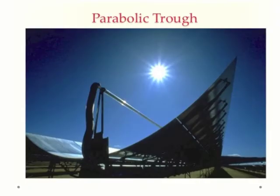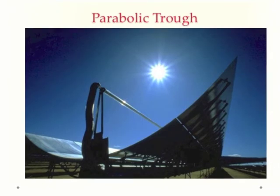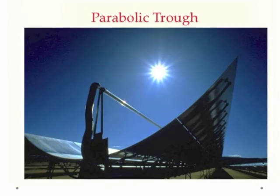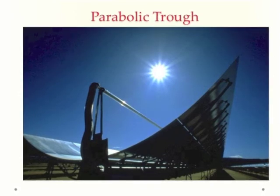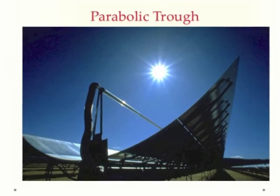In the parabolic trough CSP system, curved parabolic trough mirrors are used to focus sunlight on a black pipe inside an evacuated tube. The fluid in the black pipe gets very hot, and that heat is used to produce steam.